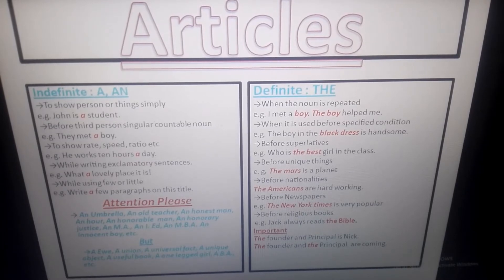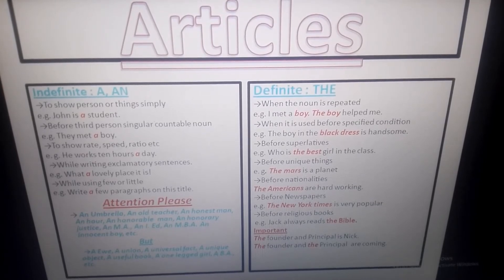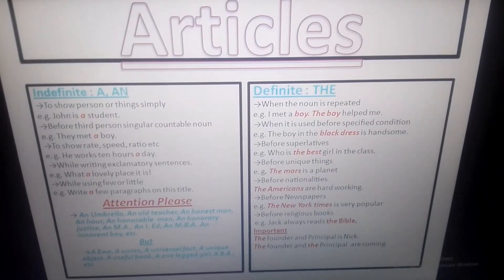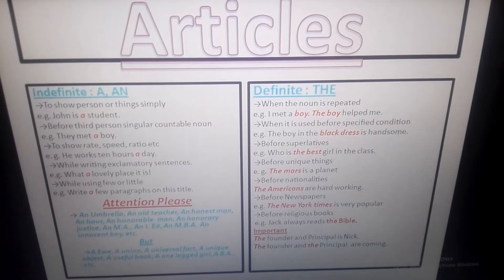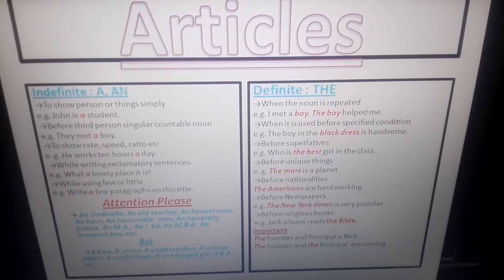Articles are of two types basically: they are indefinite and definite. Under the topic indefinite, there are two words — they are 'a' and 'an'. Let me describe point by point.